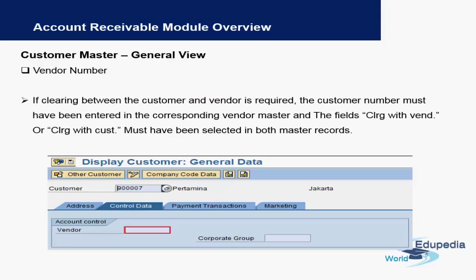Within the general view, we also have a vendor number. This is mainly for clearing purposes — if there is a clearing required between a customer and a vendor, a customer number must be entered in the vendor master and similarly a vendor number needs to be entered in the customer master.